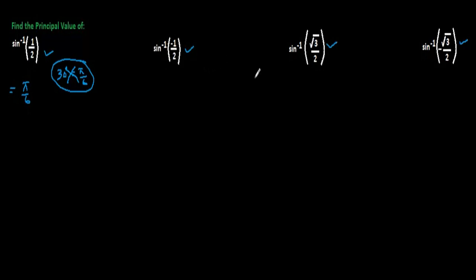Here sine inverse √3/2. We should know at which angle sine becomes √3/2. That is 60 degrees, which can be written as π/3. So sine inverse √3/2 will be equal to π/3.